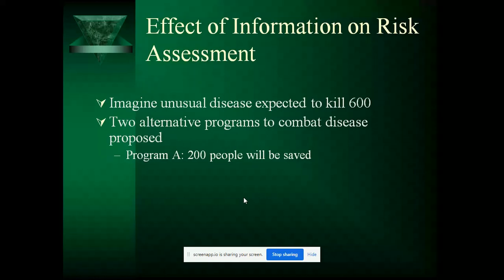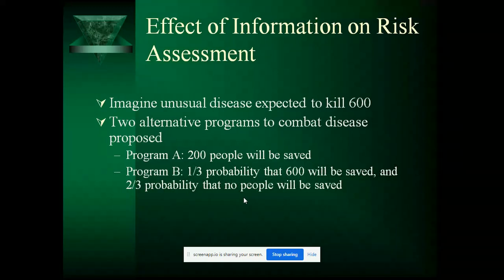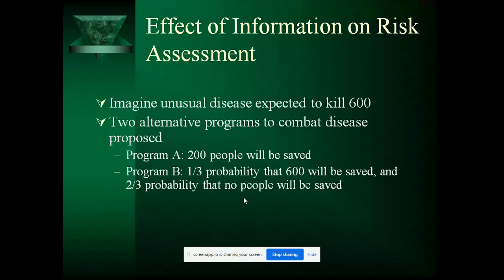There is a question: there are two alternative programs to combat a disease where 600 are affected. In one program, 200 will be saved — only one third. In another program, there is a one-third probability that all 600 will be saved, and a two-thirds probability that no people will be saved. Which program do you prefer? This is known as the risk assessment factor. Generally people go for program B, while some prefer program A. There are many reasons for selecting an alternative program — economy, investment, financial concerns — but here they give only two alternatives: save 200 people for certain, or attempt to save 400 people with uncertainty.